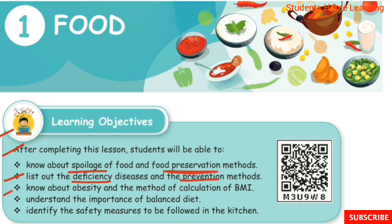Know about obesity and the method of calculating BMI. The importance of a balanced diet — the first step is to identify the safety measures to be followed in the kitchen.